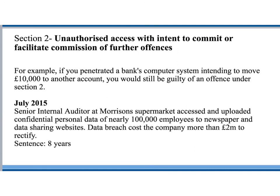Section 2 is unauthorised access with intent to commit or facilitate the commission of further offences. This means not only logging in without permission to a computer system but then intending to commit a further crime. For example, if you penetrated a bank's computer system intending to move £10,000 to another account, you would be guilty under Section 2. Similarly, hacking into somebody's eBay account to defraud a customer also breaks Section 2, as you have both gained unauthorised access and have the intention to defraud.